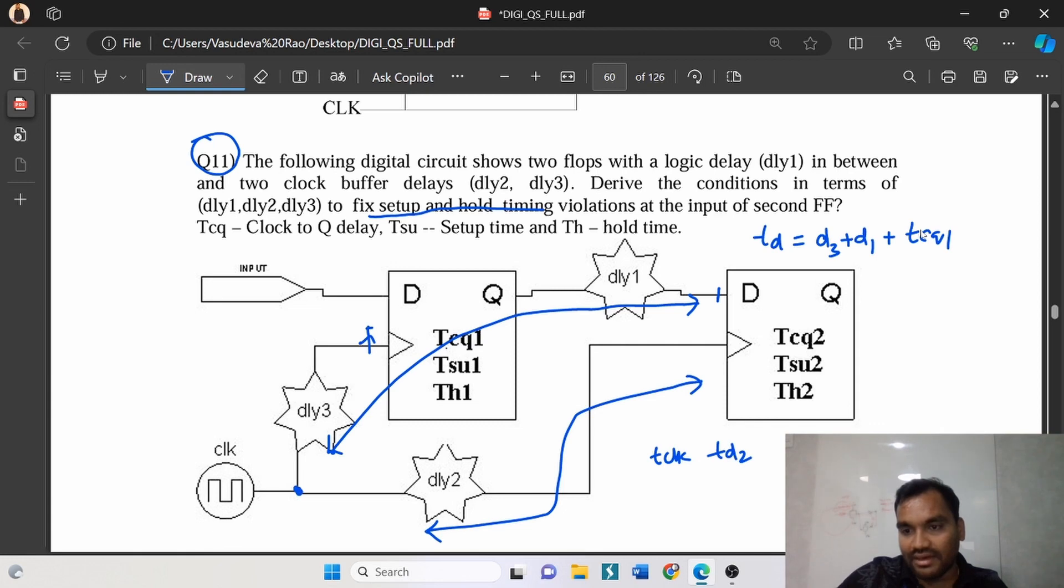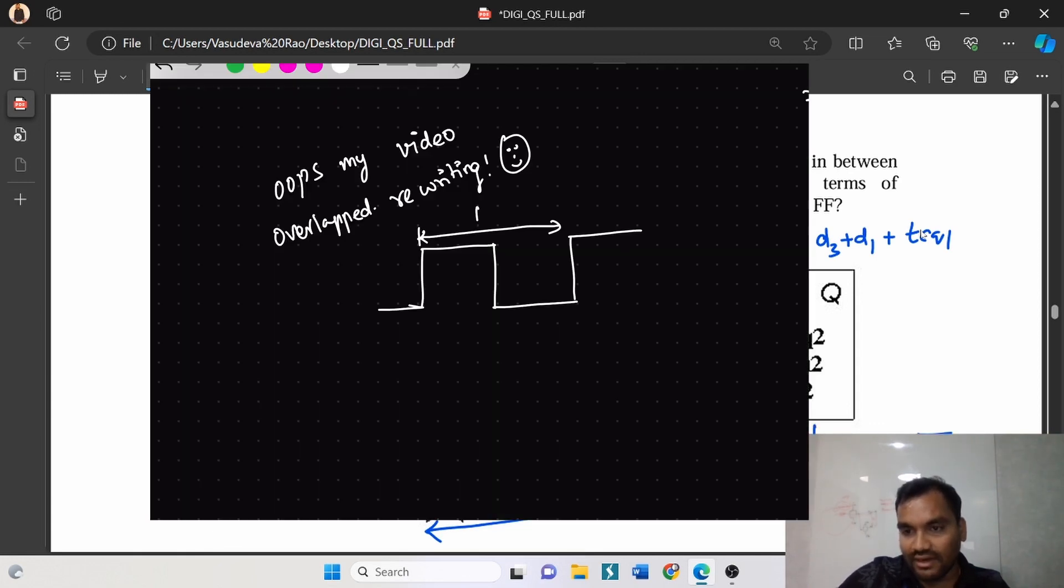Now, simply how I will remember without doing any equations is: this one clock period part I will remember. And here how I will analyze is some Tcq delay plus some combo logic delay plus some setup time.